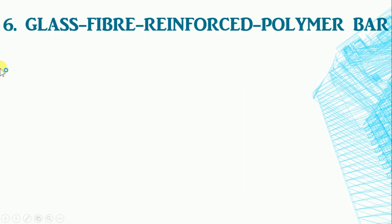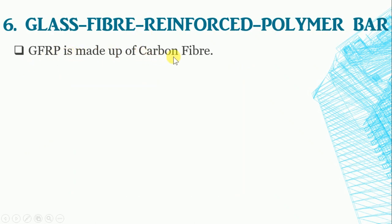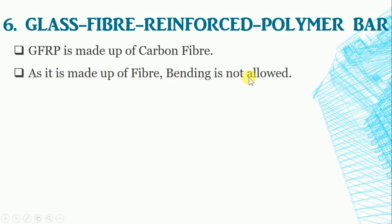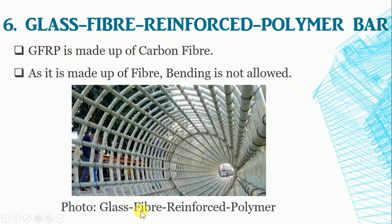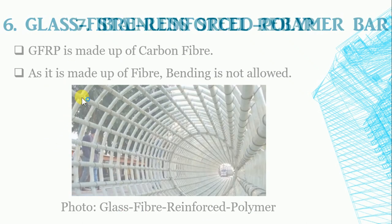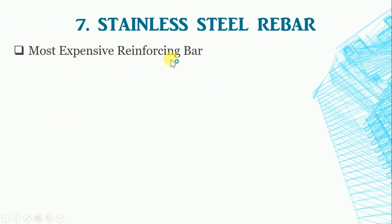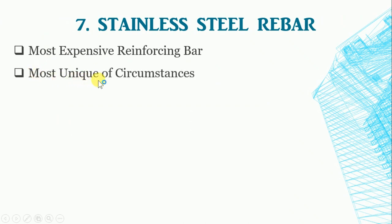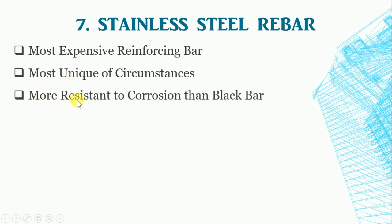Glass Fiber Reinforced Polymer Rebar: GFRP rebar is made of carbon fiber. As it is made of fiber, bending is not allowed. It is very resistant to corrosion but costly when compared to other rebars. Stainless steel rebar is the most expensive reinforcing bar available, about 8 times the price of epoxy coated rebar, and also the best available bar for most projects. Stainless steel rebar offers 1500 times more resistance to corrosion than black bar, is more resistant to damage than any other corrosion-resistant rebar type, and can be bent in the field.